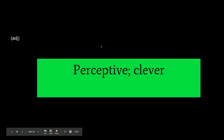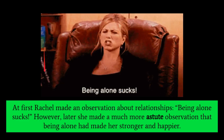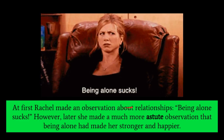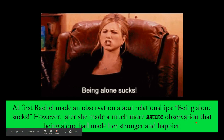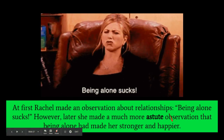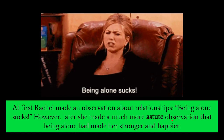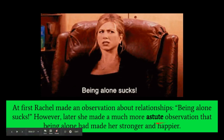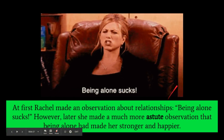For our next word we have astute, which means perceptive and clever — a very positively connotative adjective. At first Rachel made an observation about relationships: 'Being alone sucks.' However, she later made a much more astute observation that being alone had made her a stronger and happier person. Being astute has positive connotations — it's the idea of coming to some kind of very wise realization and sharing that realization.